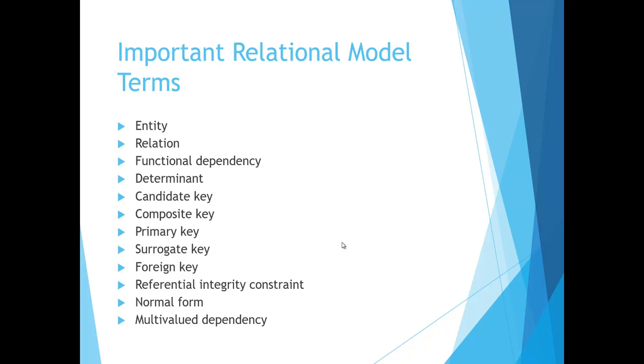Some of the important terms used in the relational model are the entity, the relation, the functional dependency, determinant, candidate key, composite key, and primary key.